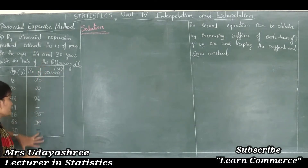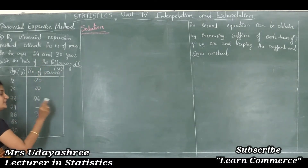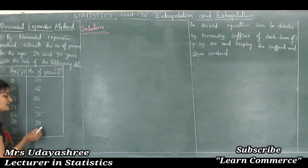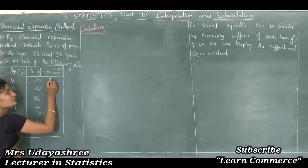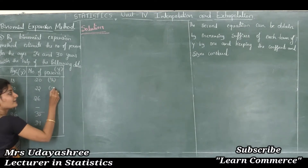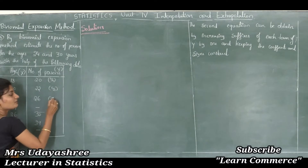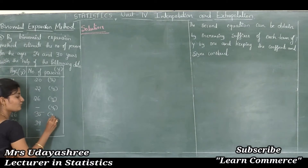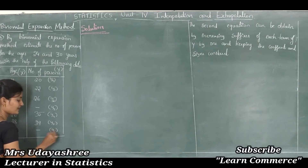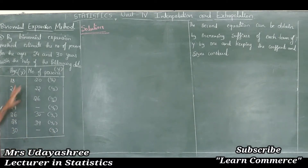In the y observations: 20 is y naught, y1 is 22, y2 is 26, y3 is a missing value, y4 is 35, y5 is 39, and y6 is a missing value. These are the dependent variables or y observations.